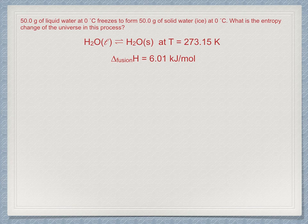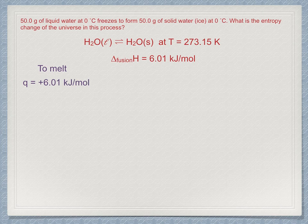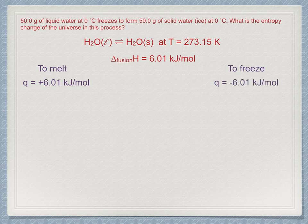Now, fusion is the melting process. To get something to melt, we have to put heat into it. So Q would be plus 6.01 kilojoules per mole. And freezing is just the opposite. We must take heat out of it. So, in this case, Q would be minus 6.01 kilojoules per mole.